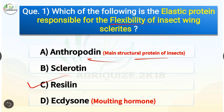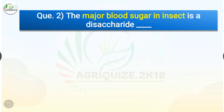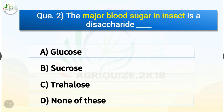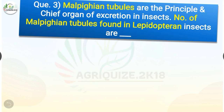Ecdysone is the molting hormone. Question number two: the major blood sugar in insect is a disaccharide. The options are glucose, sucrose, trehalose, or none of these. The correct answer is option C, trehalose. The major blood sugar in insect is a disaccharide which is trehalose.